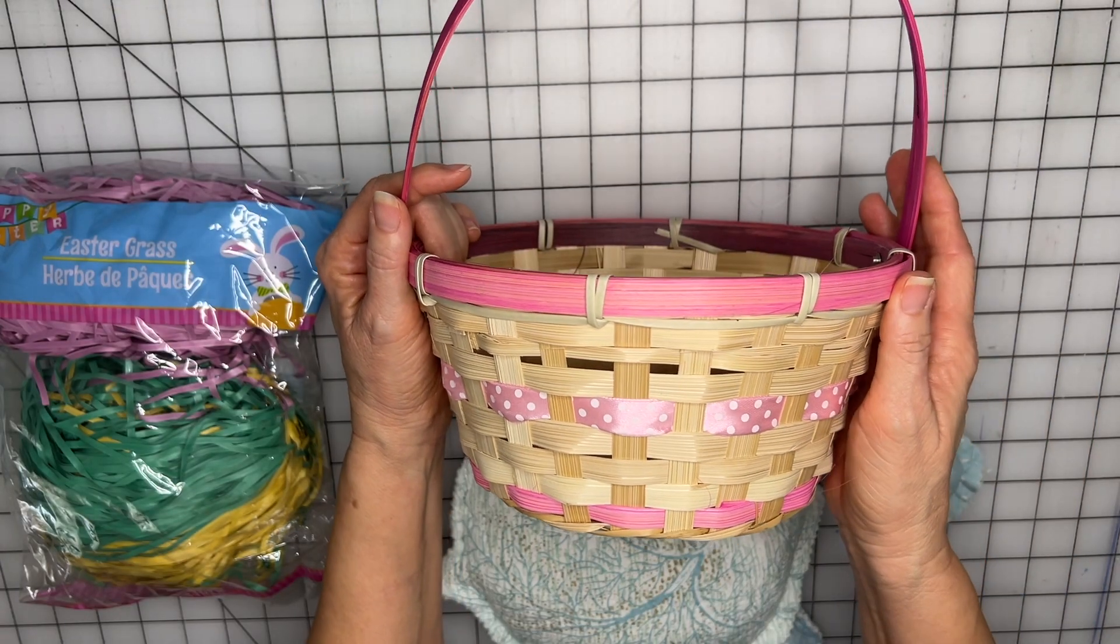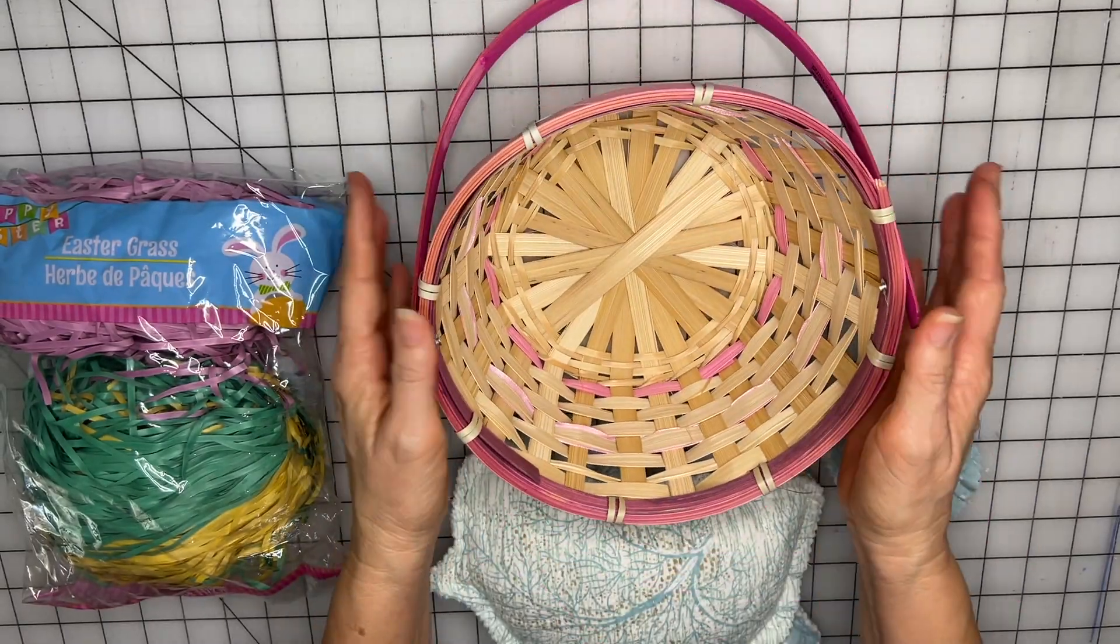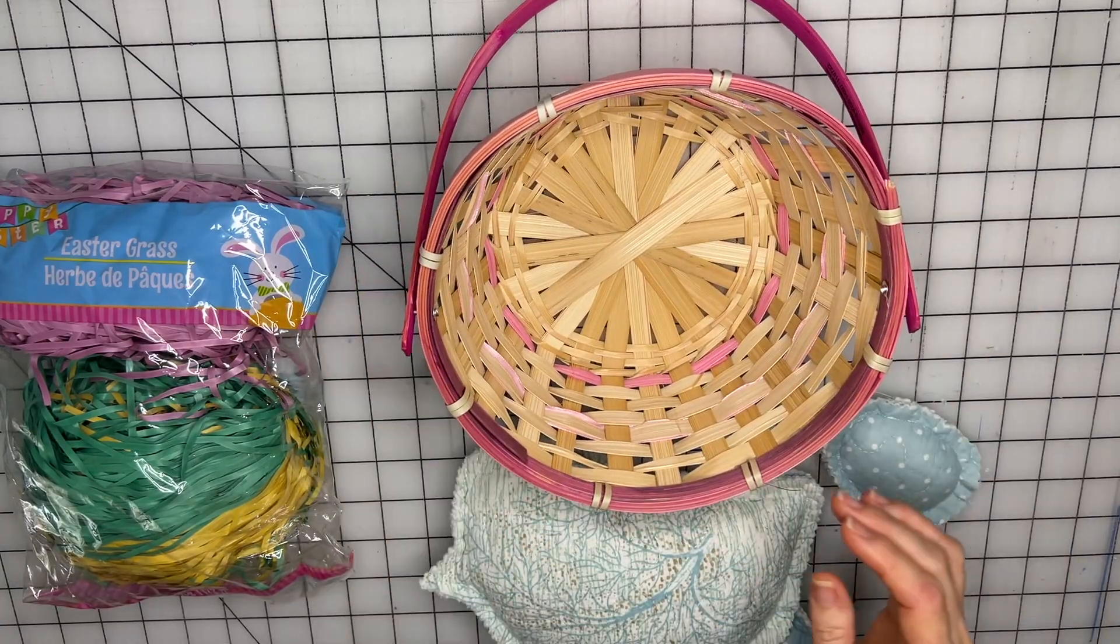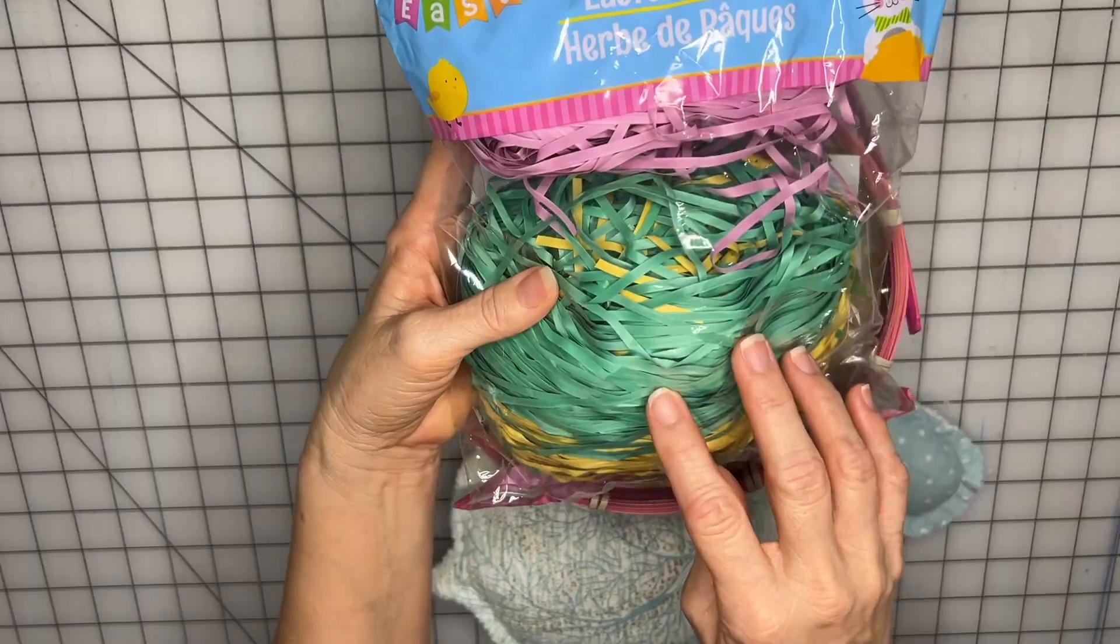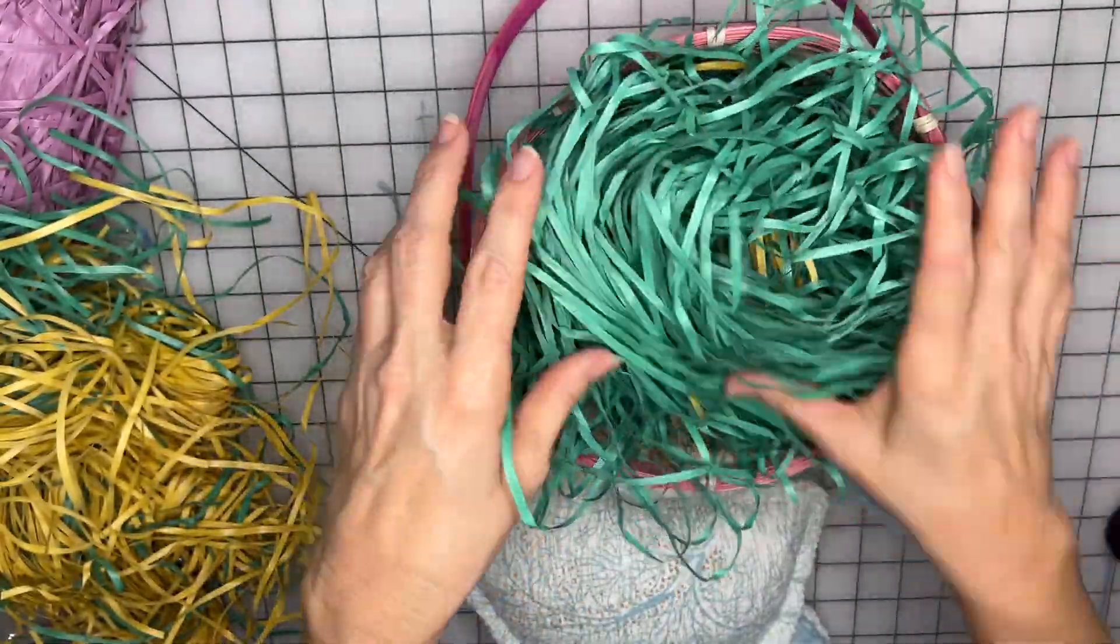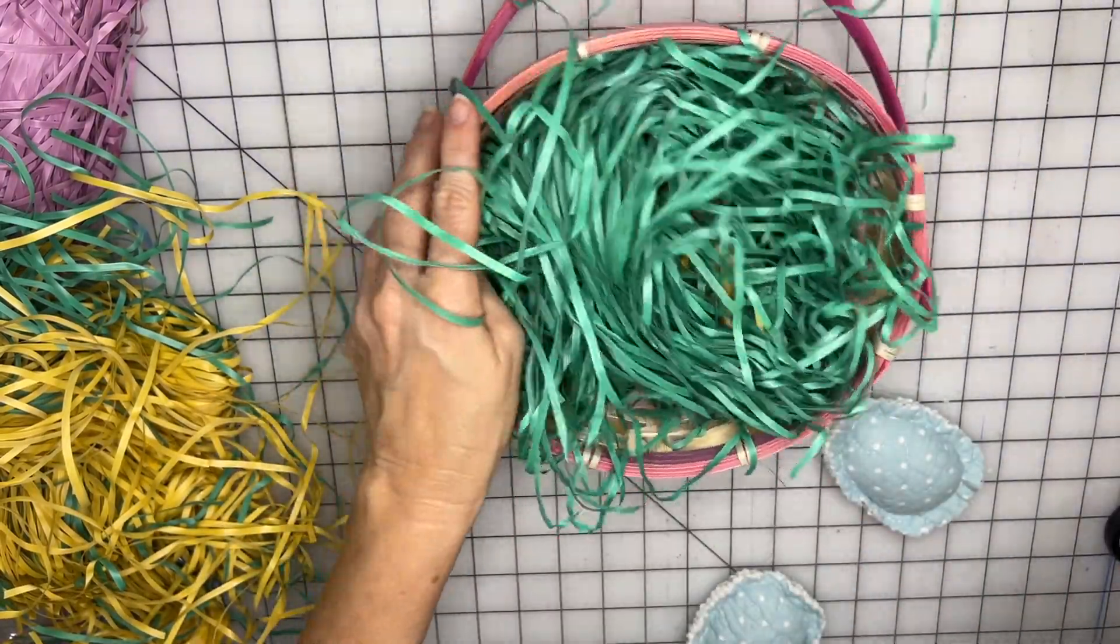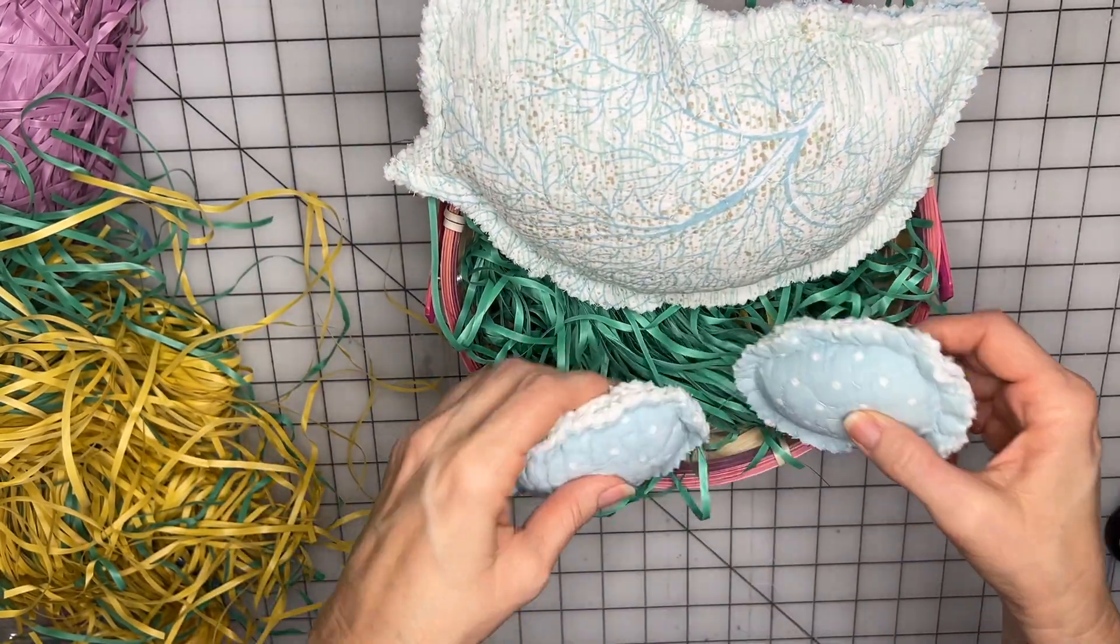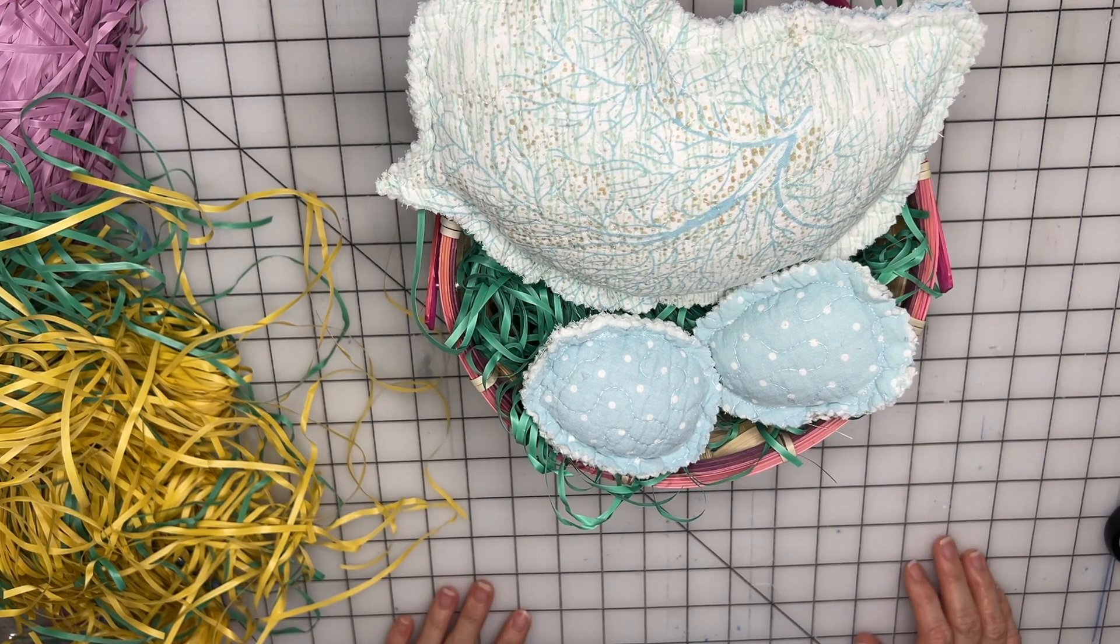Okay, I found this little basket at Dollar Tree. Isn't it adorable for $1.25? And I like that I can move the handle down so that I can see the top of the basket. And I found this Easter grass at Dollar Tree also. I like this more muted green grass like that. And then you can set your little chicken in there with the two little Easter eggs. Isn't that adorable?